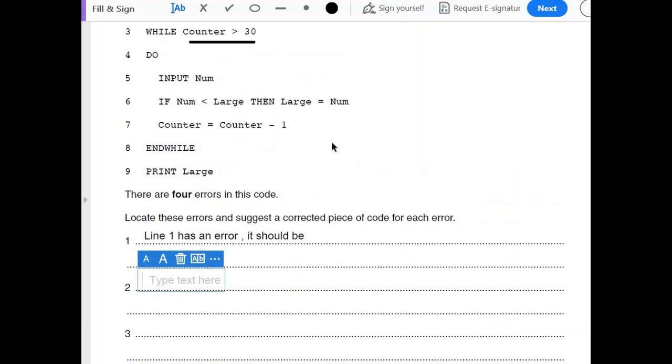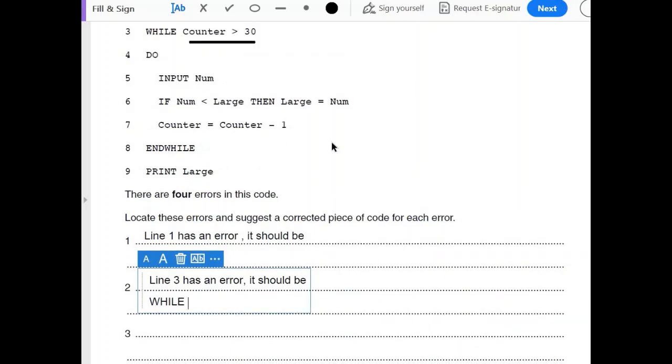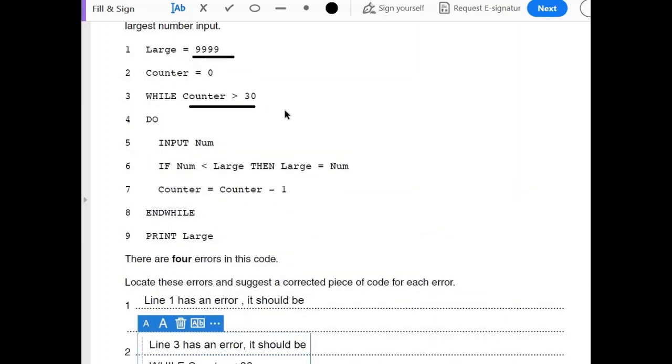So this is line number 3. Line 3 has an error. It should be what? It should be WHILE counter is less than 30, so the loop should run from 0 till 29, 30 times.